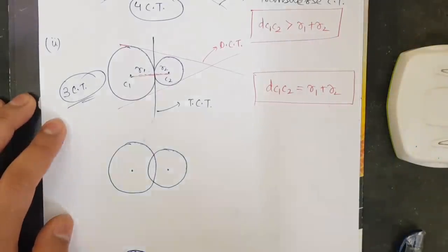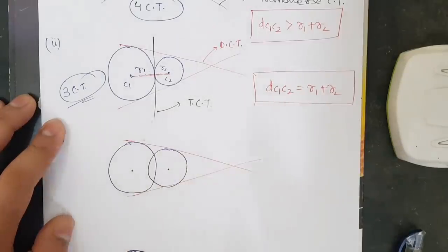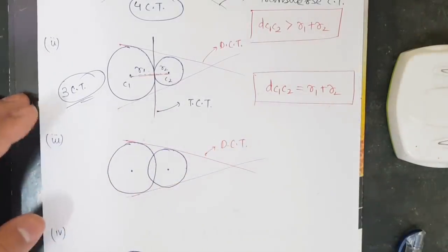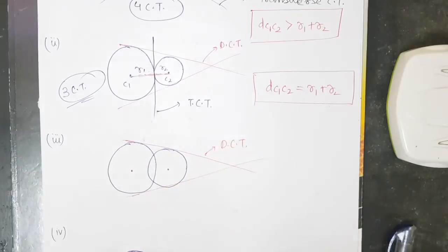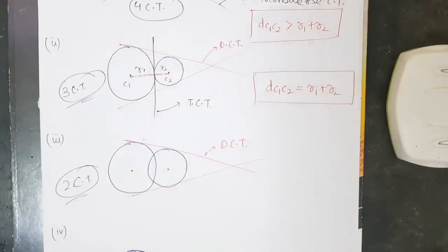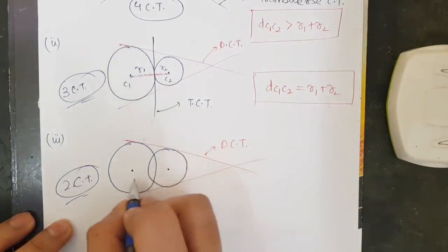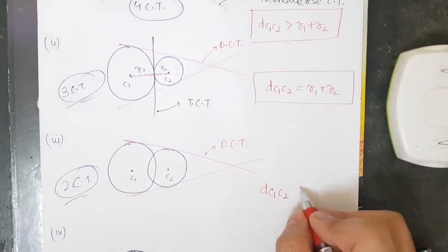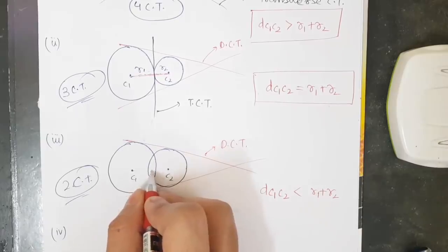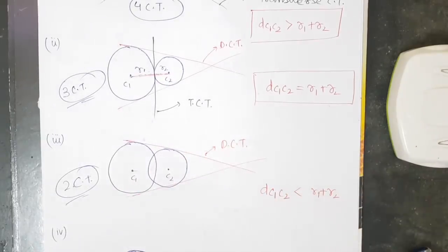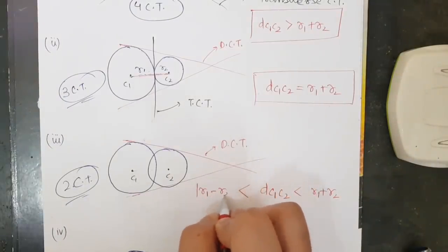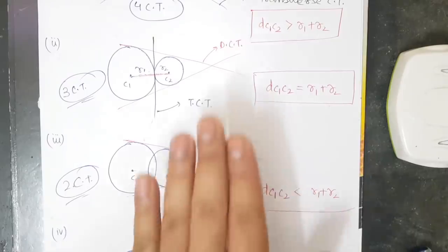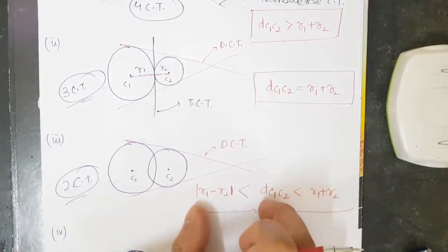The next case is when the two circles intersect each other. Here we can only draw two direct common tangents - no transverse common tangent can pass through without crossing the circles. So total common tangents equal two. The condition here is that d(c1,c2) is less than r1+r2 but greater than |r1−r2|.